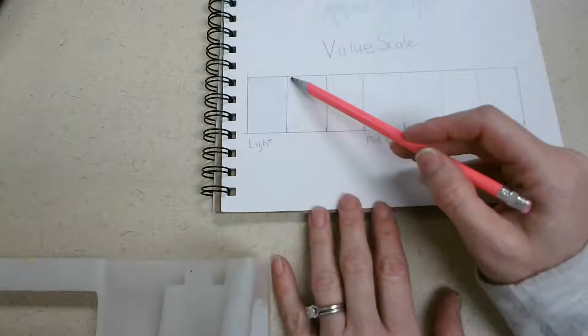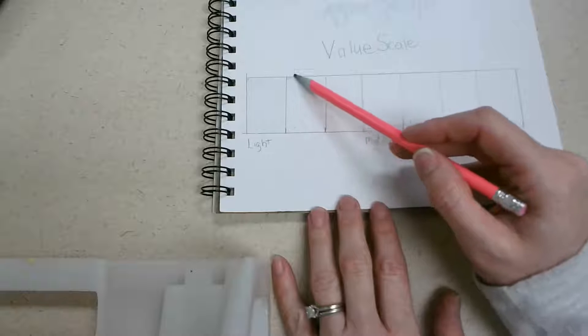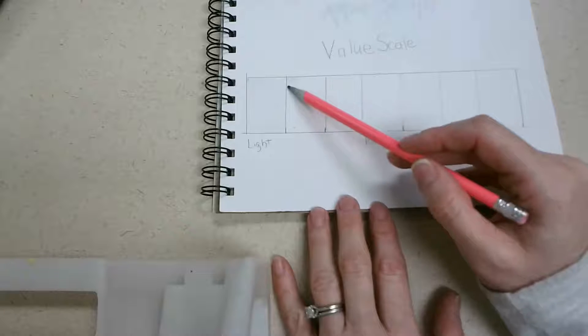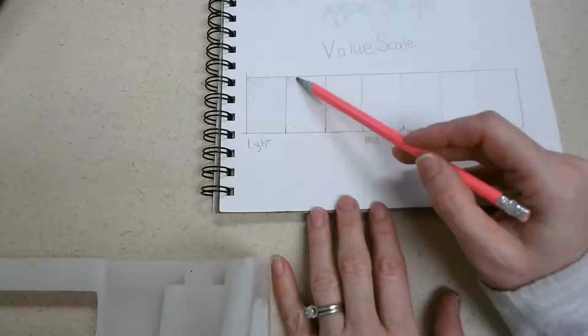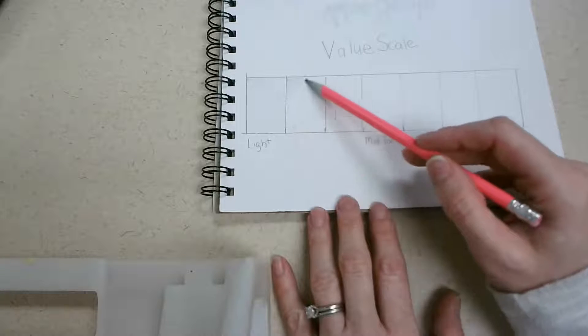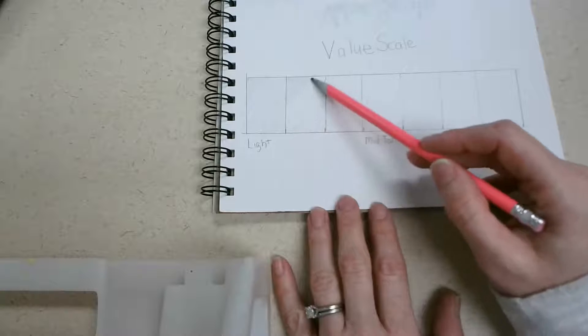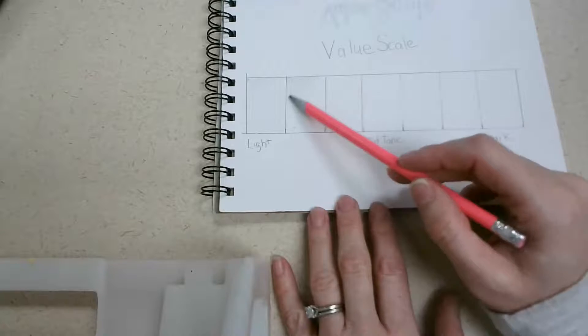Okay, so now my next box, I'm going to do the same thing, holding my pencil lightly, but I'm going to kind of go back and forth, adding a second layer as I work across my box. So see how I keep moving back and forth? I go down and then I go back up.